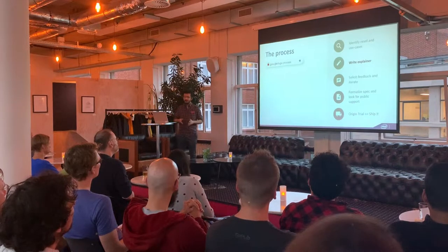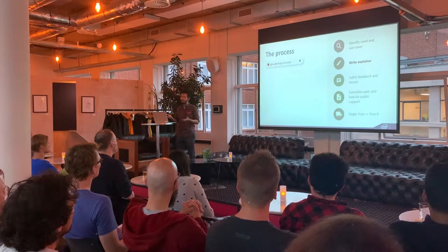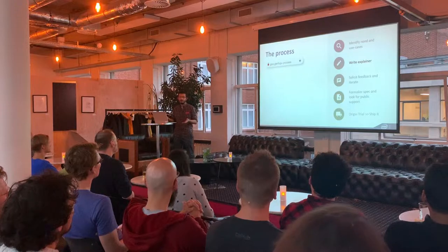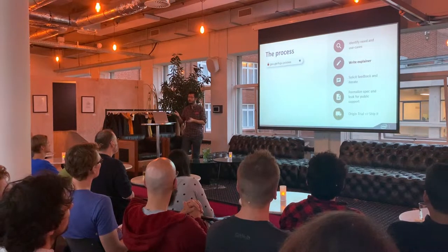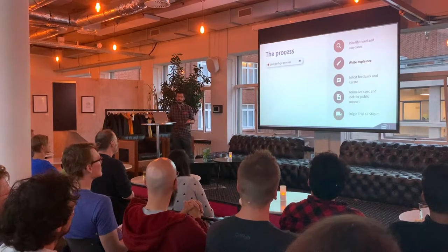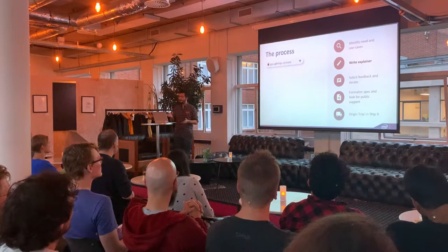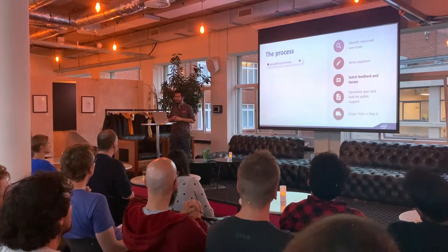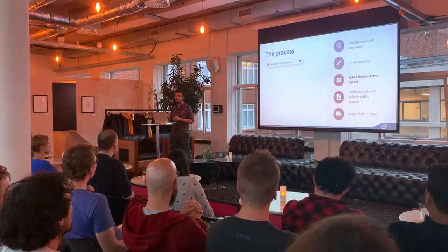For each identified feature, the rest of the process is identical. We begin by writing an explainer: a short document where we explain what problem we're trying to solve, what the API would look like, what the main use cases are, and what alternatives have been considered. It's a short, simple document that gets passed around. Once we have an explainer, we start asking for feedback from anyone interested — other browser engineers, spec people, potential users, and different teams in Chrome such as the security, privacy, and permissions teams.